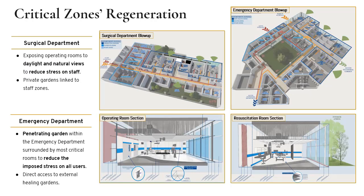The previous design considerations were implemented in the most critical zones: the surgical department and emergency department. In the surgical department, natural views were incorporated in the design of operating rooms through curtain walls overlooking the main central garden and Nile view, treated with shuttering systems to ensure integration of nature without disrupting the rooms' function. In the emergency department, the most critical rooms were designed to overlook a central green atrium to reduce stress on staff, and the short-stay units had direct access to the central garden and Nile views. In conclusion, this further shows how research findings were incorporated in all stages of the design.